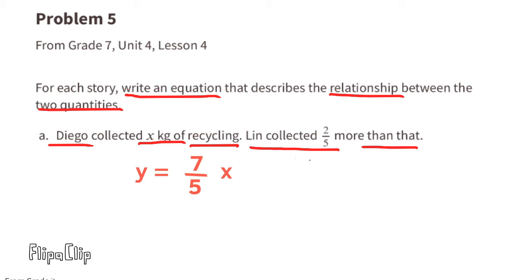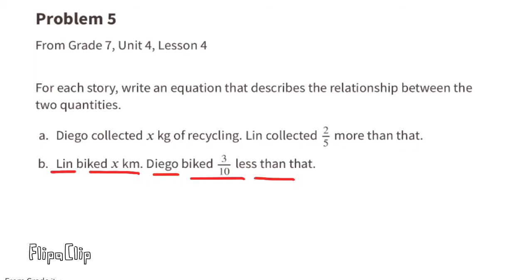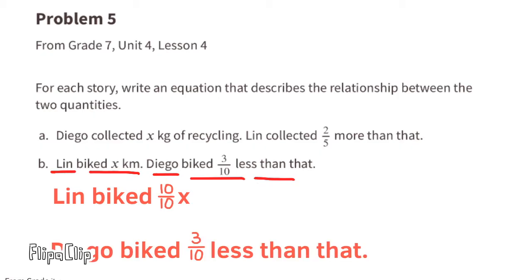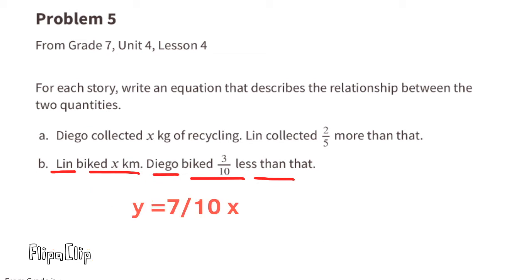Story B: Lynn biked x kilometers; Diego biked three-tenths less than that. Lynn biked ten-tenths x, and Diego biked three-tenths less, so ten-tenths x minus three-tenths x equals seven-tenths x. The equation for this story is y equals seven-tenths x, where y represents the distance Diego biked and x represents the distance Lynn biked.